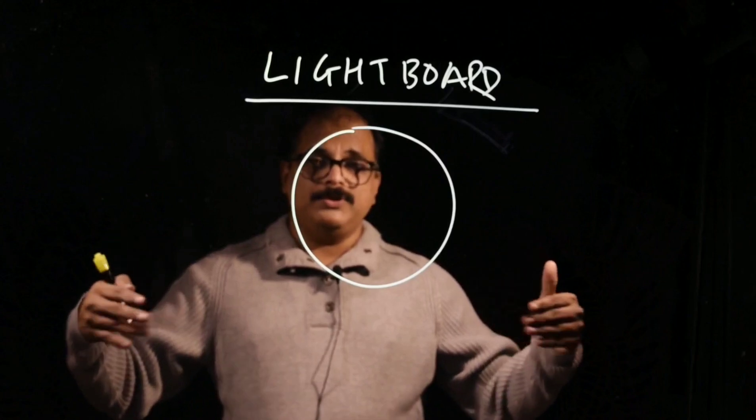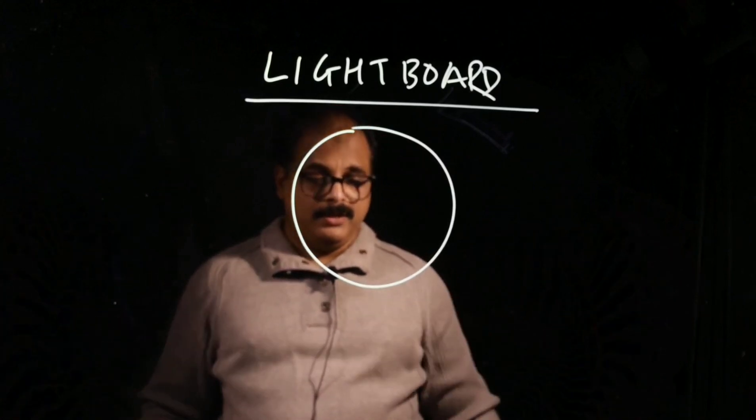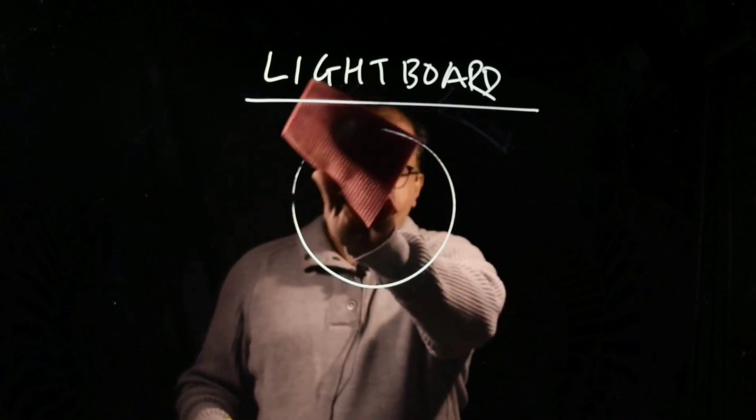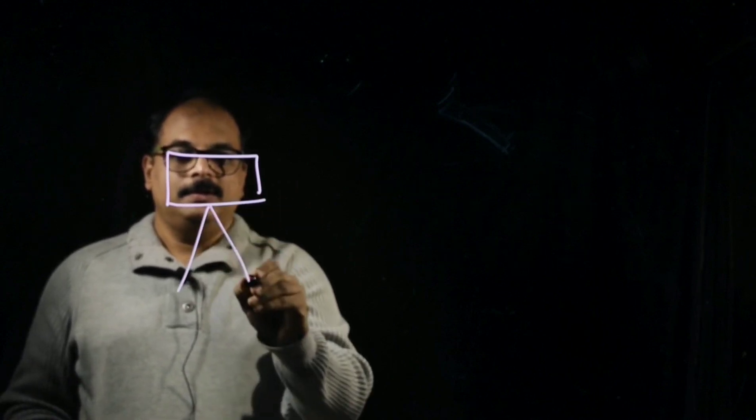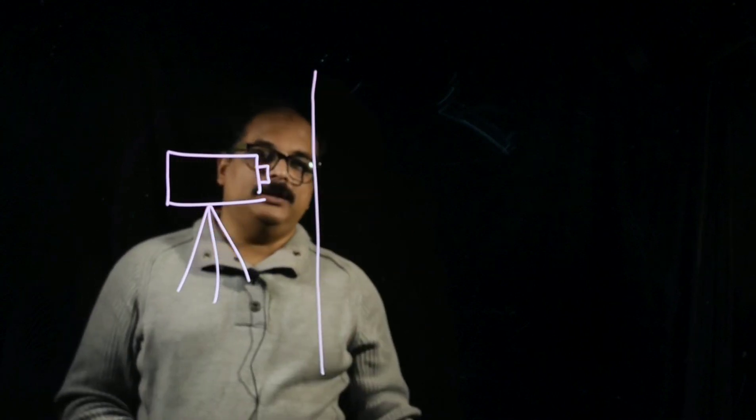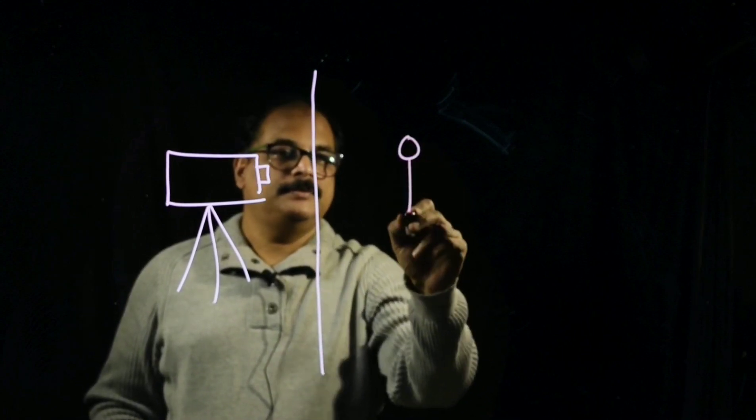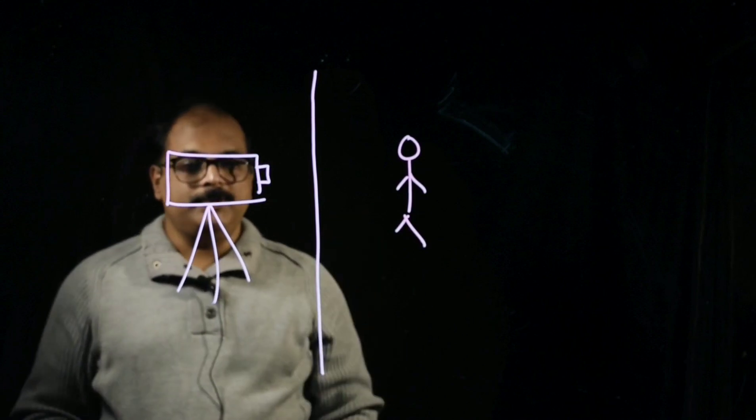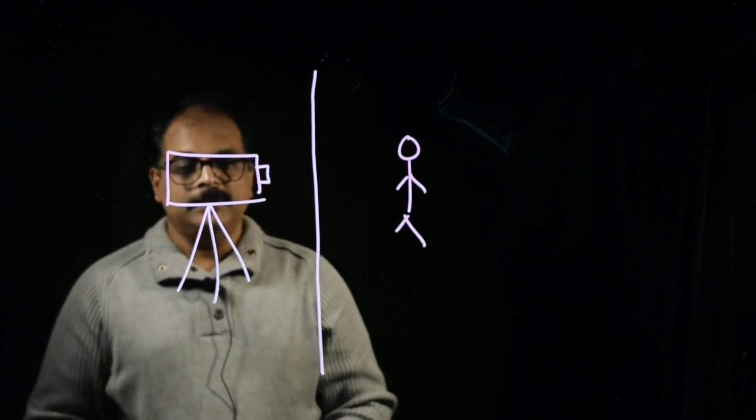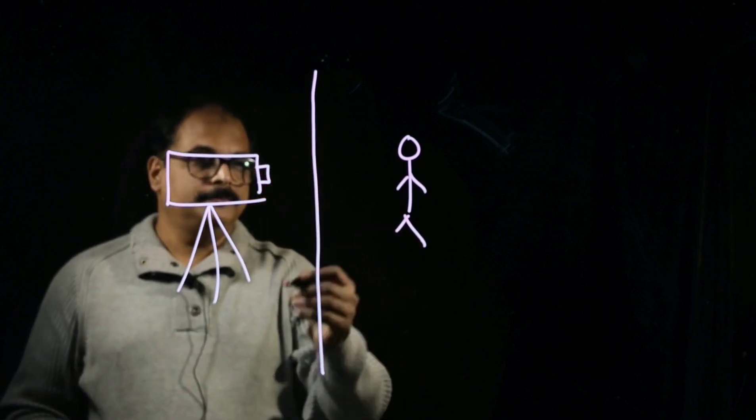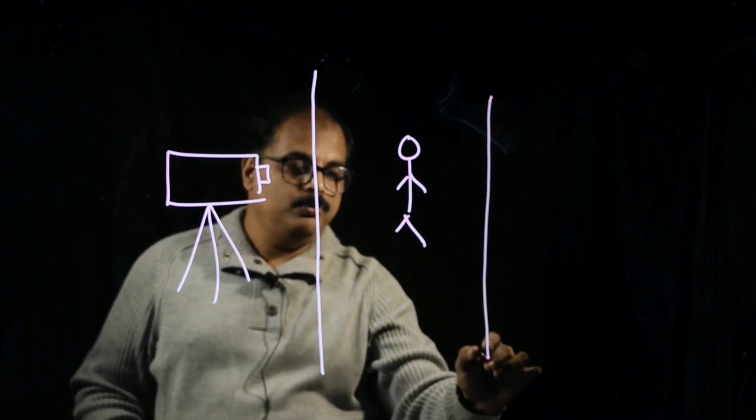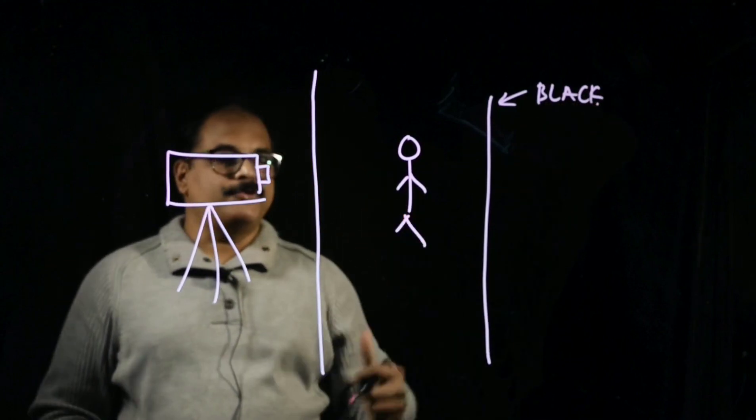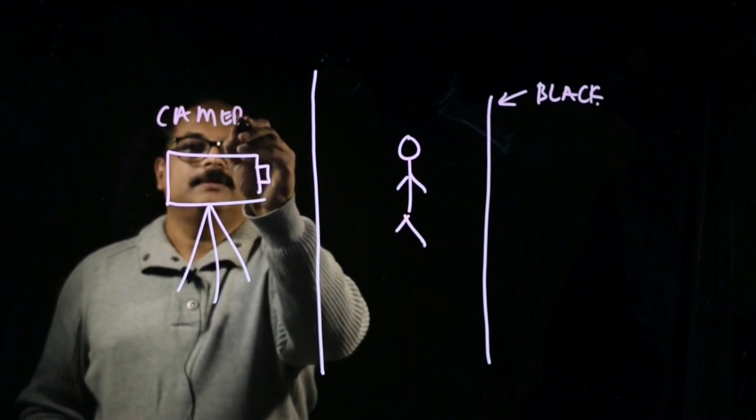This lightboard is a very simple board which is made up of plexiglass or acrylic board. Let me tell you how exactly the placement of different things here. In lightboard technology, there is your camera, and between me and the camera there is this glass. I'm standing here, so between me and camera there is glass. This glass is either plexiglass or actual glass. I am recording with the camera, and behind me there is a black backdrop. This is the camera.